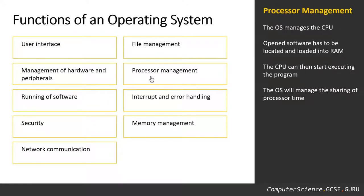The next feature of an operating system is processor management. The processor — the brains of the computer — needs something to manage it. The operating system will manage the processor. When a program gets opened, the operating system will find it on the hard drive and load the instructions into RAM, the temporary memory. It will then tell the CPU, the processor, that it can start to execute that program. The operating system will also manage the sharing of processor time, prioritizing and managing that time appropriately if more than one program needs it.